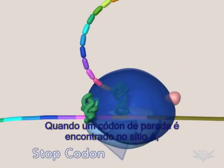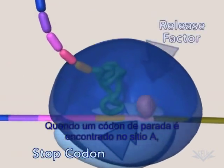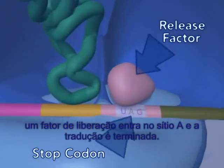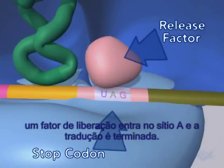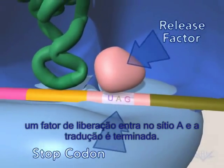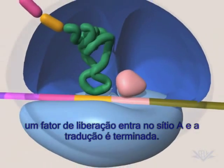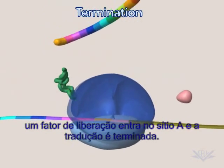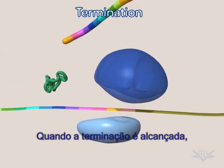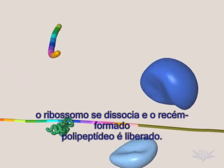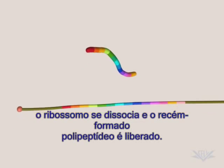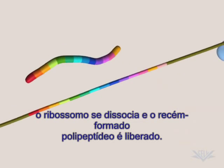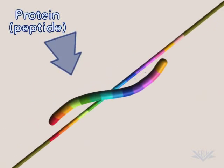When a stop codon is encountered in the A-site, a release factor enters the A-site and translation is terminated. When termination is reached, the ribosome dissociates and the newly formed protein is released.